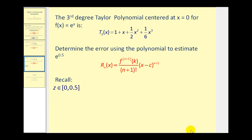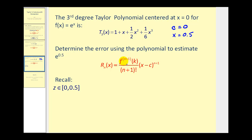Here we have a degree three Taylor polynomial centered at x equals zero for f of x equals e to the x — this could also be called the Maclaurin polynomial. Since it's centered at x equals zero, c equals zero. We want to determine the error when using this polynomial to estimate e to the 0.5, meaning x equals 0.5. Since this is a degree three Taylor polynomial, we need to find the fourth derivative of f of x equals e to the x.